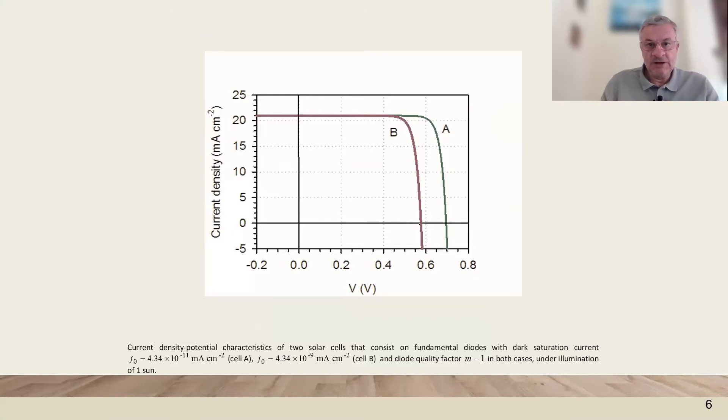If we decrease recombination, then the photo voltage increases and also the solar cell efficiency.